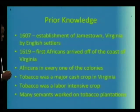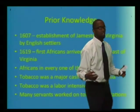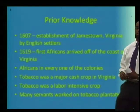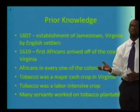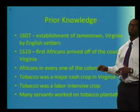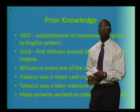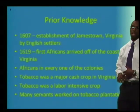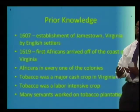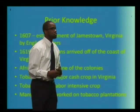Prior knowledge: from our U.S. history knowledge, we know that the first English settlement in the United States was at Jamestown in 1607. We also know that the first Africans arrived off the coast of Virginia in 1619. Keeping in mind that this document is from 1648, James Stone was alive during all of this. Africans were present in all of the colonies by this time. We also know that tobacco was a major cash crop in Virginia — very labor intensive — so you needed a lot of servants to grow and harvest it.